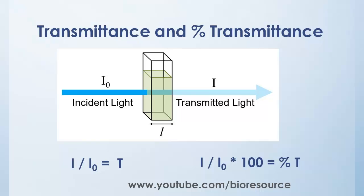The portion of the light that reaches the detector is known as the percent transmittance, and it is represented by I divided by I0 times 100, that is the percentage transmission. I0 is the incident light and I is the transmitted light.